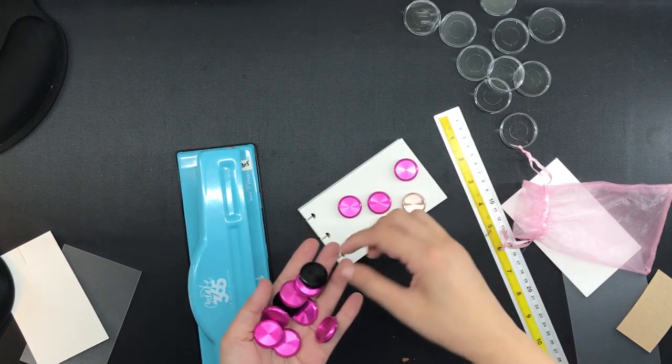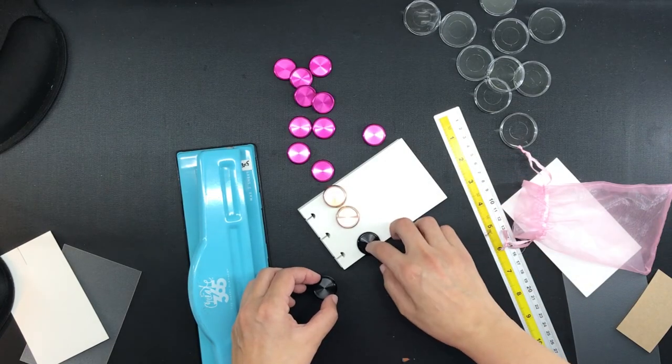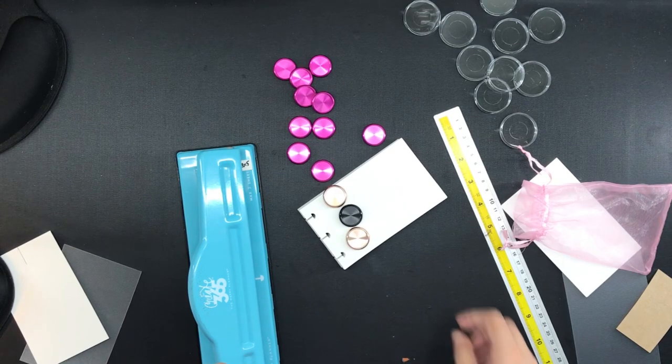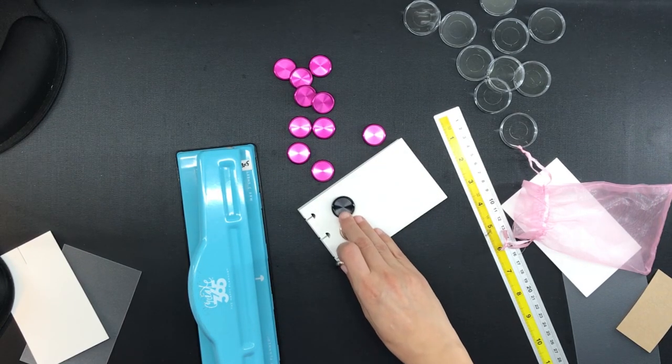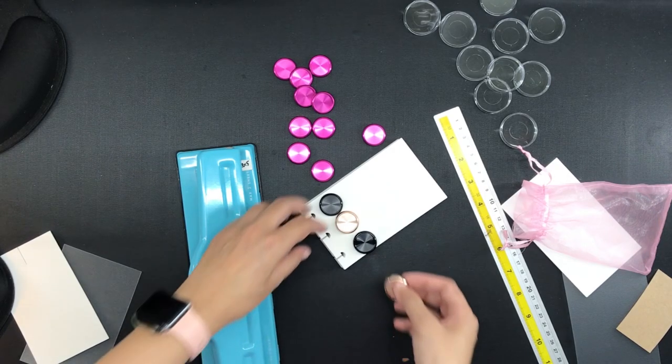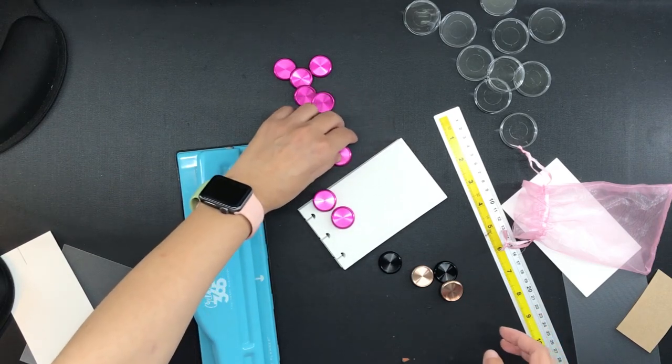Now I have three different colors here in the 24 millimeter size. I can use two rose gold and one black, one rose gold and two black, and I can also go rose gold black rose gold like this, or black rose gold black like this, but that doesn't look as pretty as three hot pink metal discs.